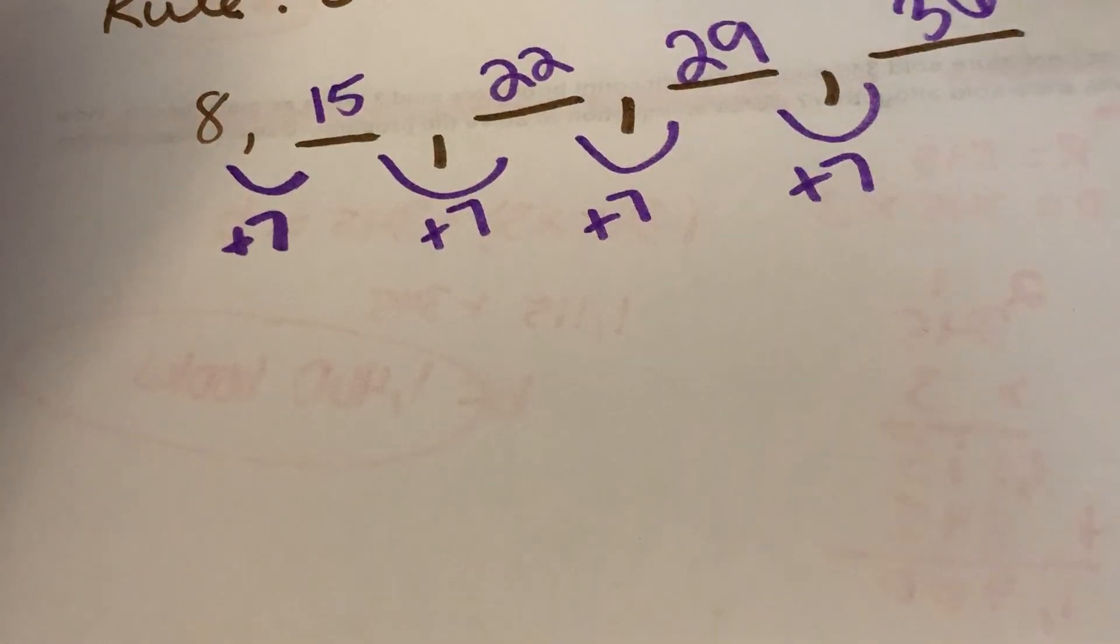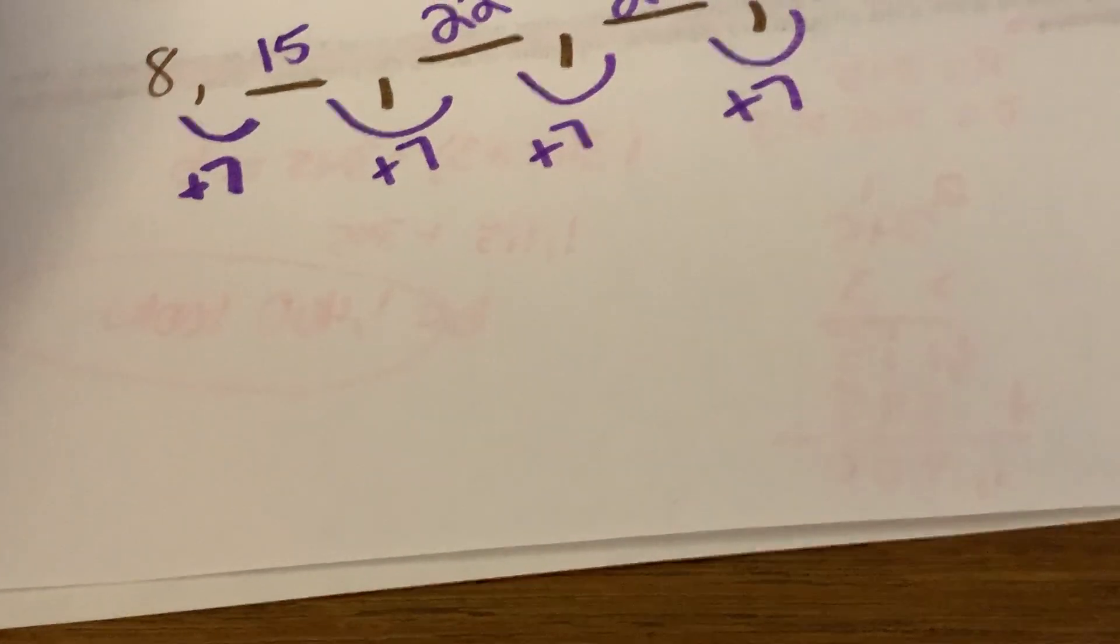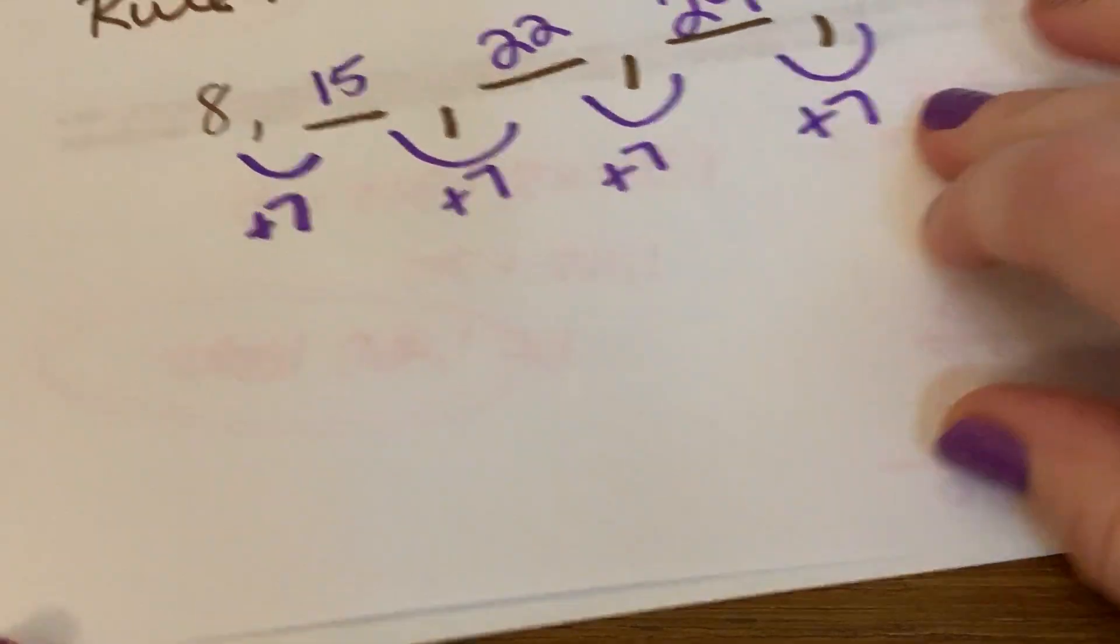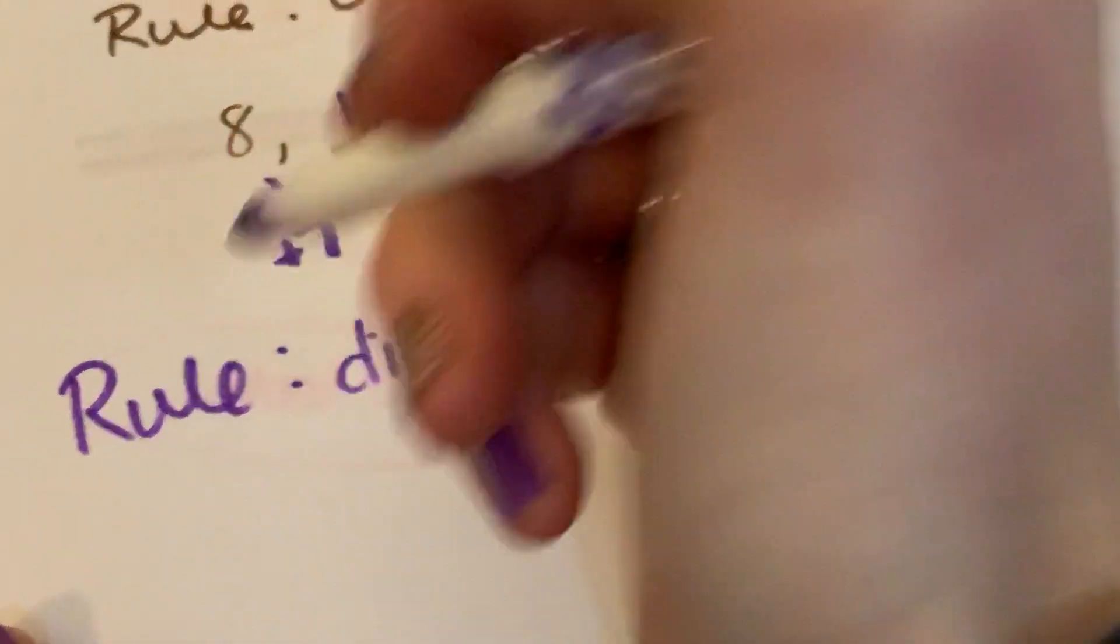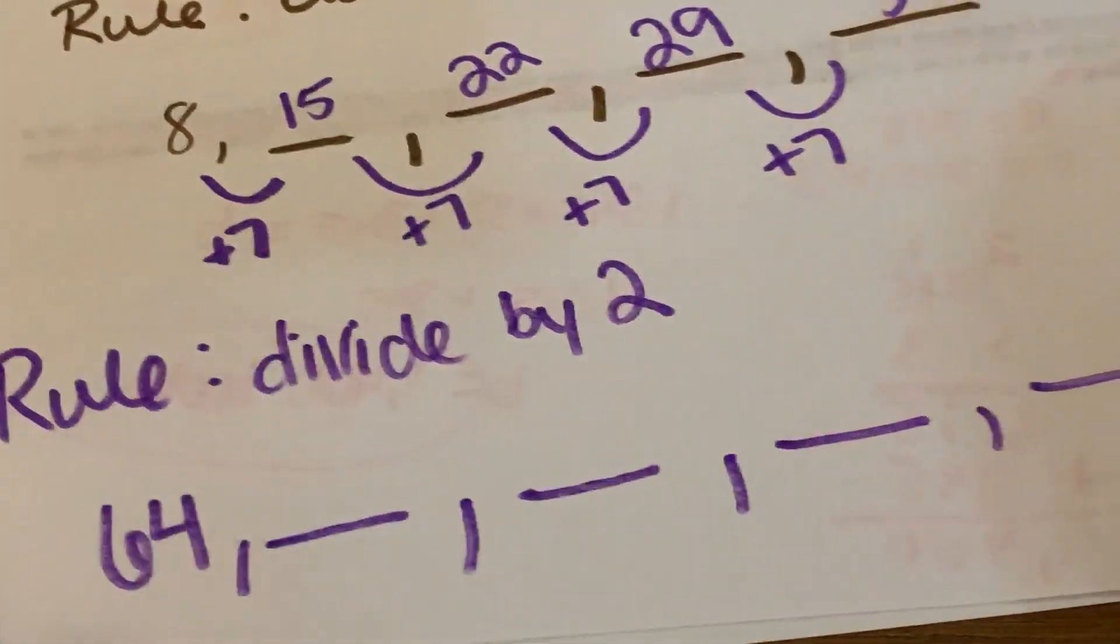I'm going to give you another one. So here is the rule. You are going to divide by 2. And your first starting term is 64, and I want you to take it out for 4 more.